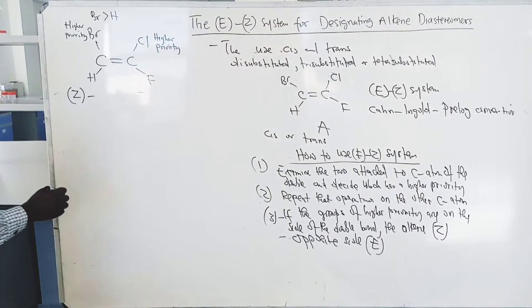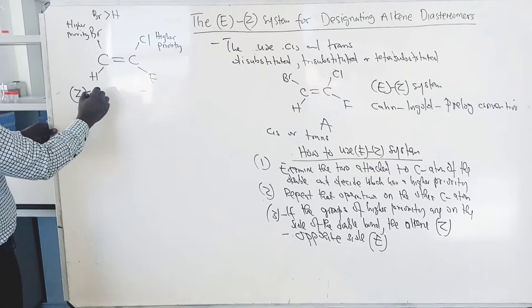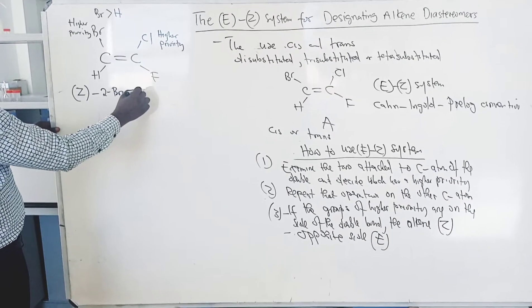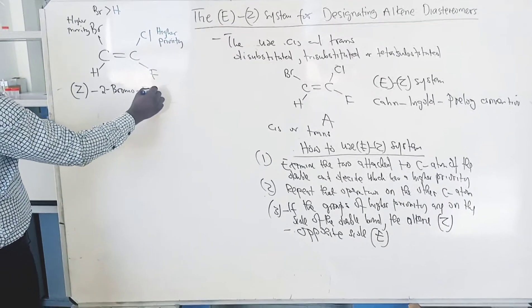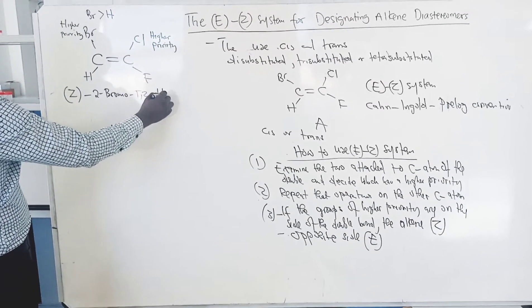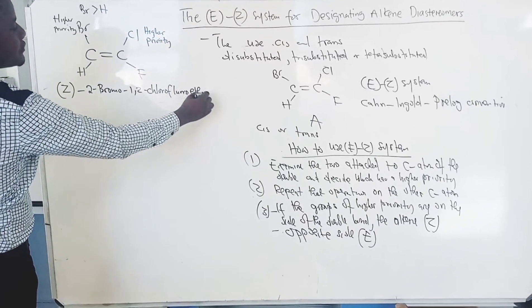Then now, we name the alkene. So, this alkene is Z-2-bromo-1,2-chloroethene.